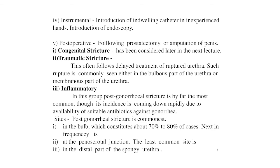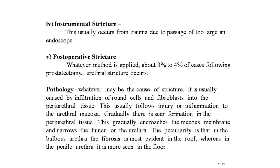Traumatic stricture often follows delayed treatment of urethral rupture, commonly in the bulbous or membranous part. In the inflammatory group, post-gonococcal stricture is by far the most common, though its incidence is rapidly decreasing due to availability of suitable antibiotics against gonorrhea. The site of post-gonococcal stricture is commonest in the bulb — constituting about 70 to 80 percent of cases — next in frequency is the penoscrotal junction, and least common is the distal part of the spongy urethra.